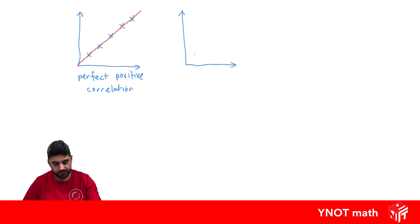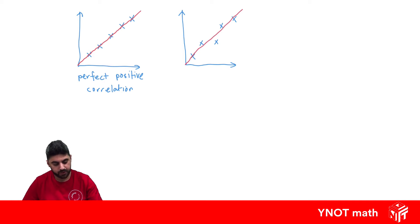We can also have something like this, where the data almost makes a perfect straight line, but not quite. Here we could say it's a strong positive correlation.